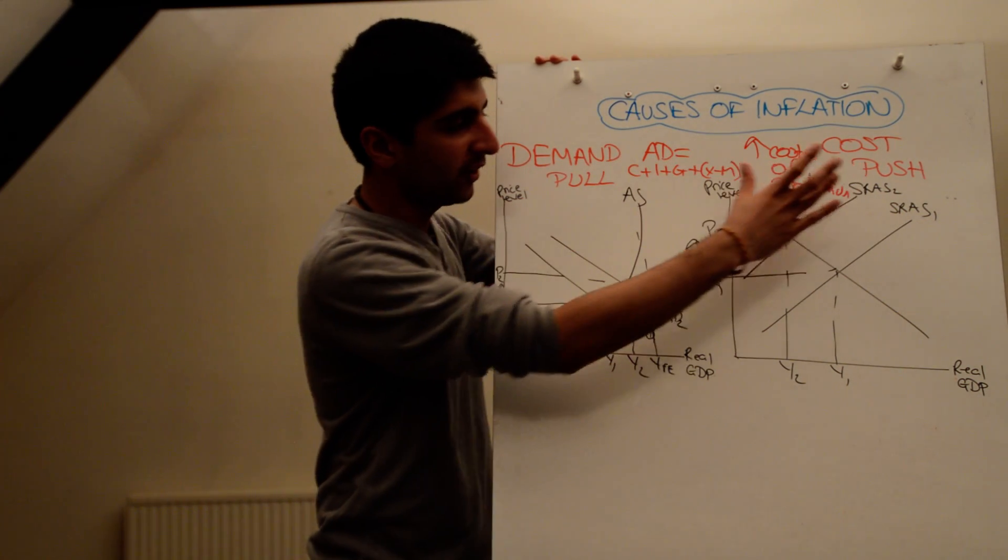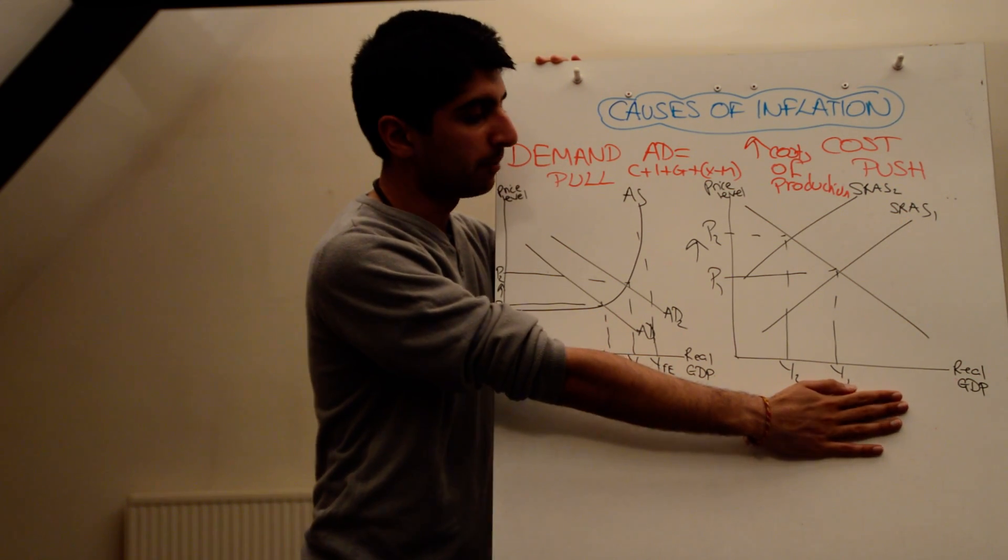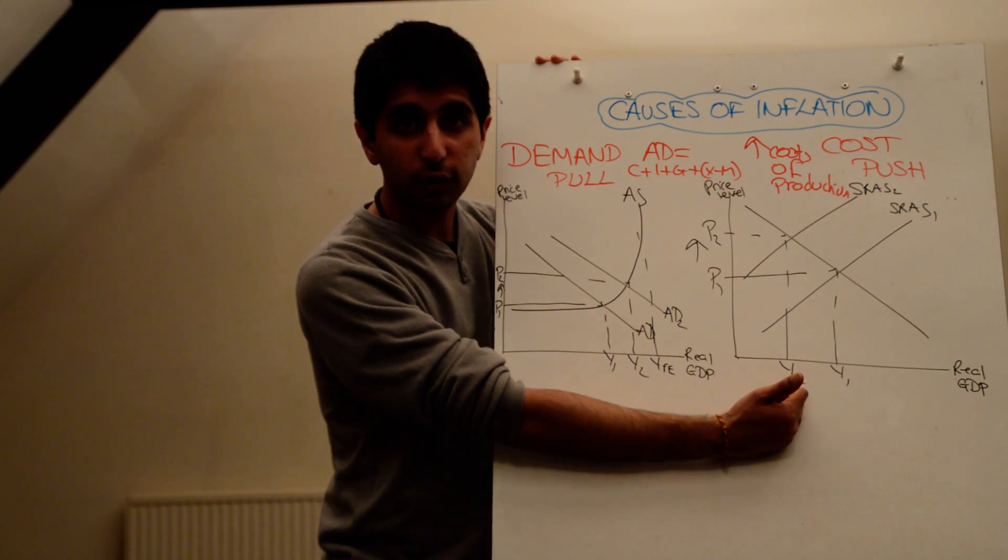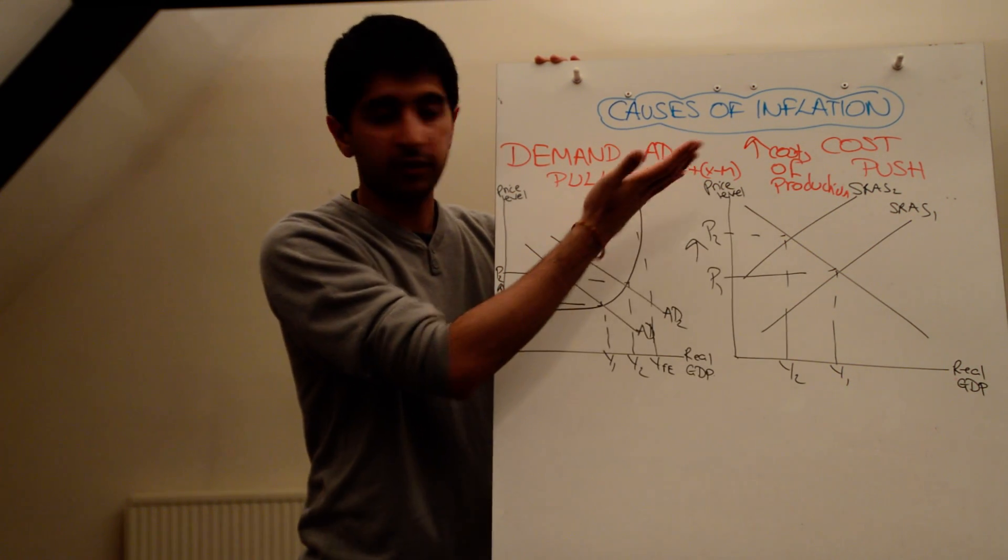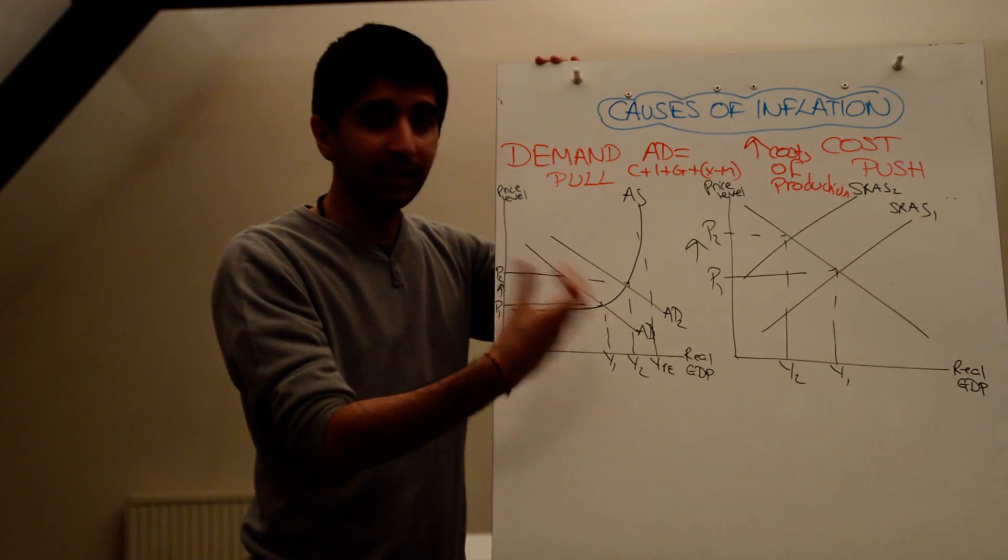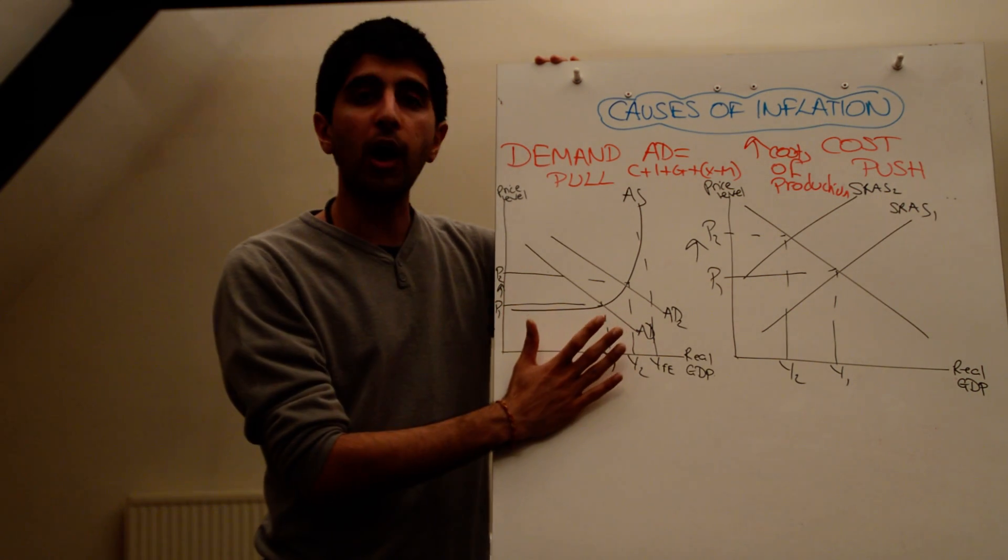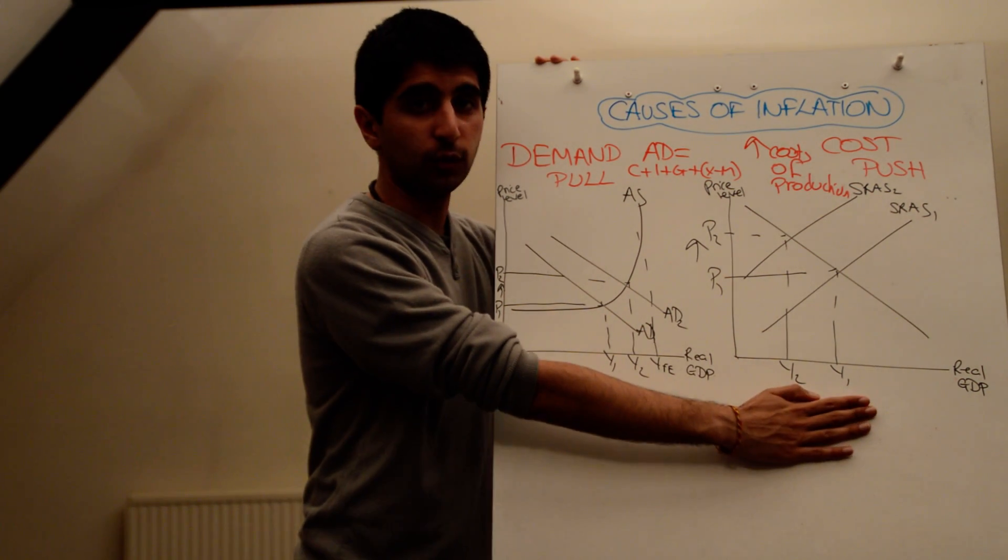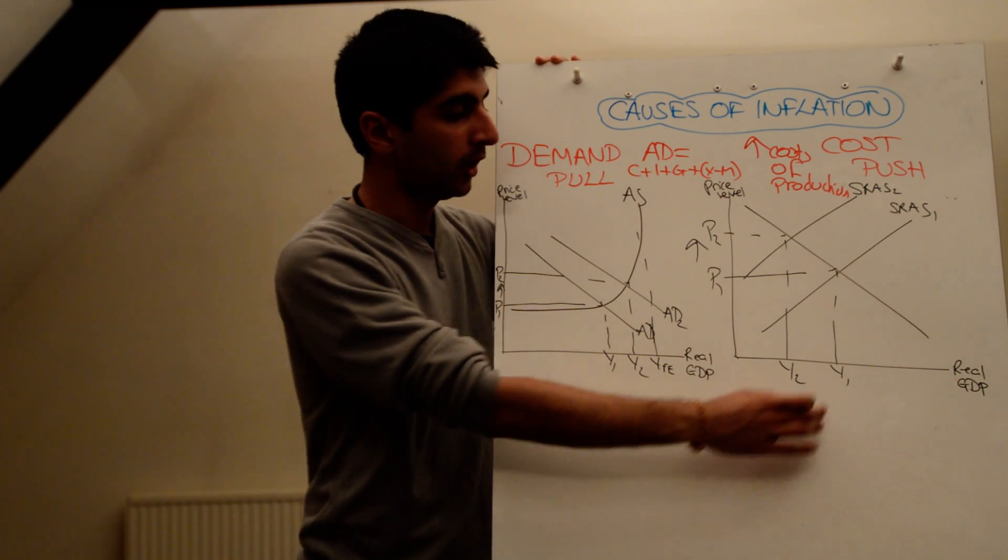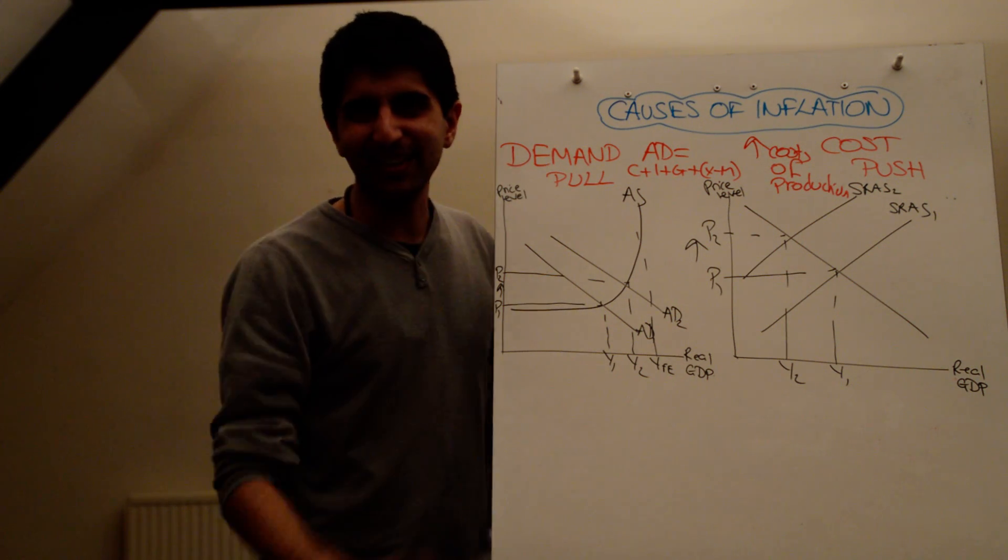So you've got demand pull inflation, cost push inflation. This one is deemed to be the most severe, the most kind of detrimental, because as you can see, there is a reduction in growth as well as an increase in inflation. At least with demand pull inflation, you see an increase in growth. And there is some incentive because of higher prices for firms to produce more. So this one is deemed to be okay, as long as it's not high and rampant. This one, though, is not deemed to be good. There is very little that an economy can do, or a government can do, to control this as well. Hope that explains it. Hope you're happy. See you next time. Thank you.